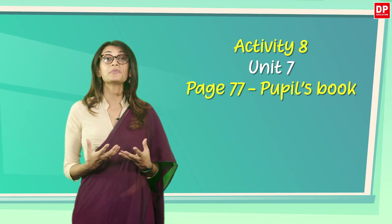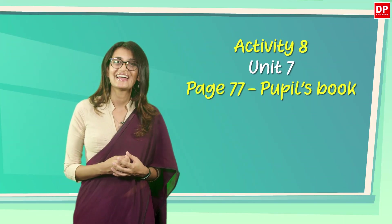Now that you have been introduced to different types of questions, let's look at a comprehension passage from your pupil's book. Let's turn to page 77, Unit 7, Activity 8. You will notice that the comprehension is a passage based on Mahatma Gandhi. The article motivates you to follow some of the principles he used when he was alive. Let's read it together.